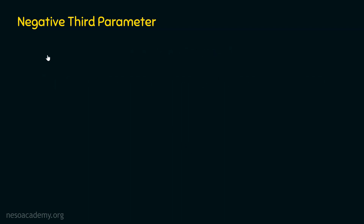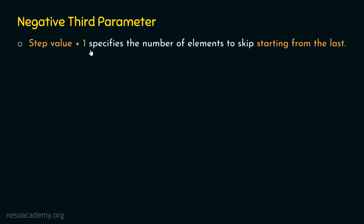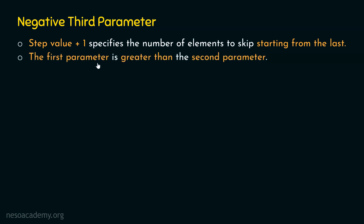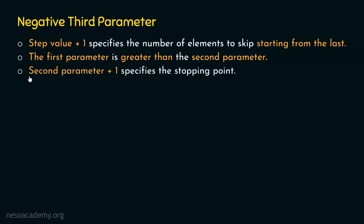The three key points to remember about the negative third parameter are: first, step value plus 1 specifies the number of elements to skip, starting from the last. Second, the first parameter is greater than the second parameter. Third, second parameter plus 1 specifies the stopping point.